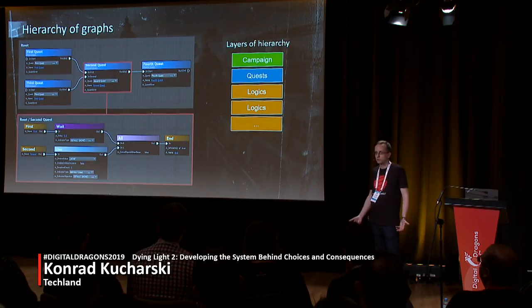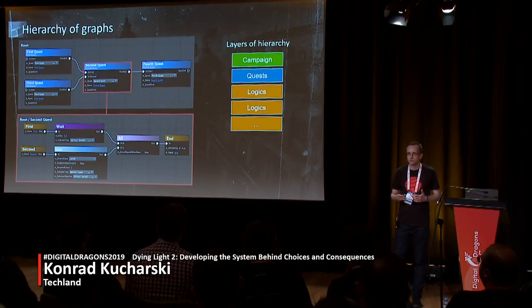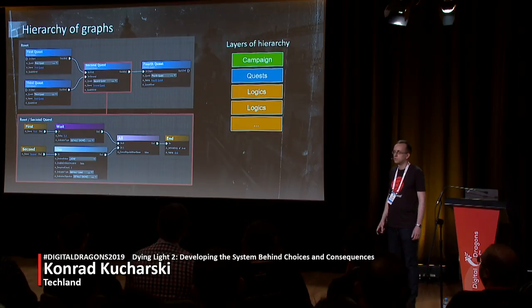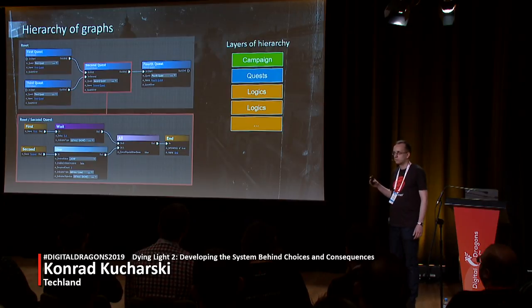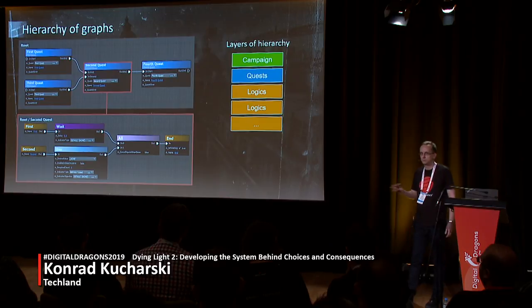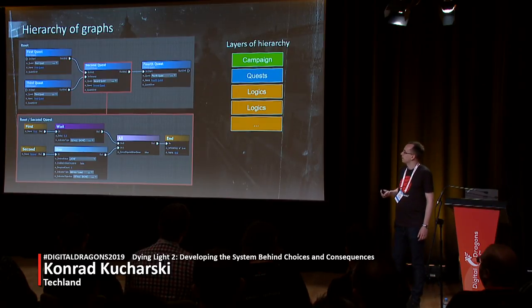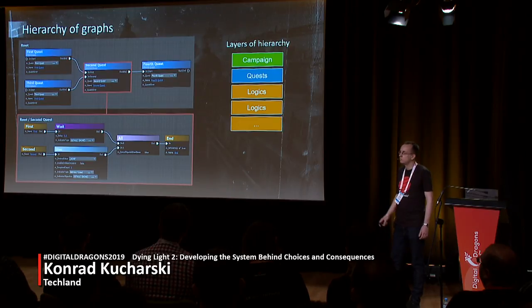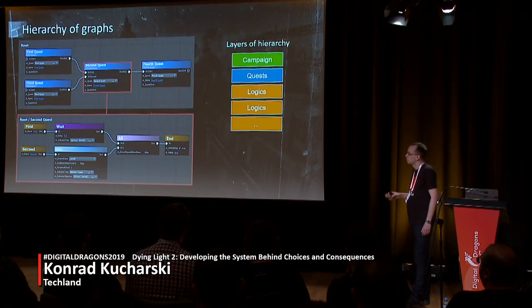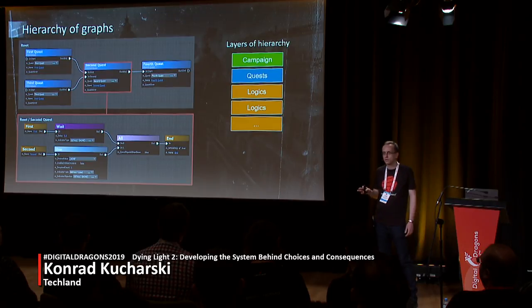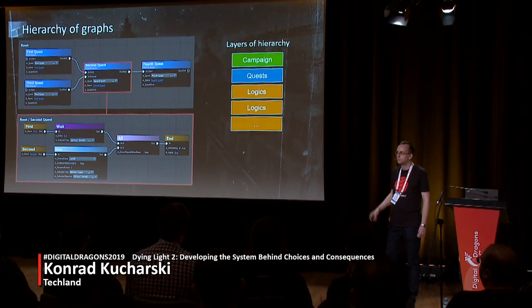We wanted to create a hierarchy of graphs, because one big flat graph would be unmanageable. We created several strict rules about what can be placed in each layer. The top layer consists of only one logic — campaign logic — which is hidden in our editor. Campaign contains the graph of quests with blue logics, and you can only place quests there. Everything else must be stored on lower layers. At the beginning I was against such strict rules and wanted logic gates at the quest level, but in the end I think it made our quests much more readable.